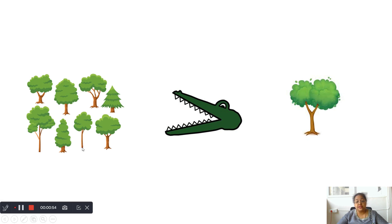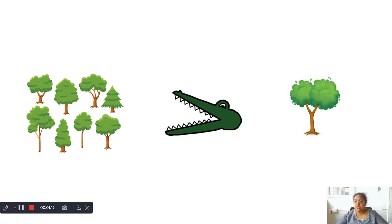See how many trees are there — count. I didn't write the number this time, you have to count. Let us count the number of trees here: 1, 2, 3, 4, 5, 6, 7, 8. How many trees are there in total? 8. And how many trees are there on this side? Only 1 tree is there. So 8 is greater than or more than 1. 8 is greater than 1.